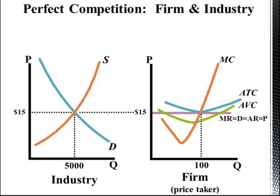The firm shown here is in equilibrium, which means it's making a normal profit. A firm that makes a normal profit is able to pay both direct and indirect costs. This firm is allocatively efficient because price equals marginal cost — they're producing what people want. And productively efficient because price equals minimum ATC — they're producing at the lowest cost.